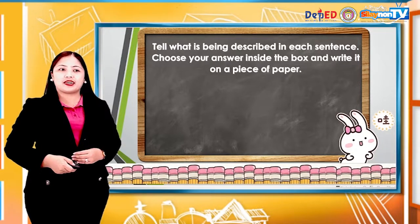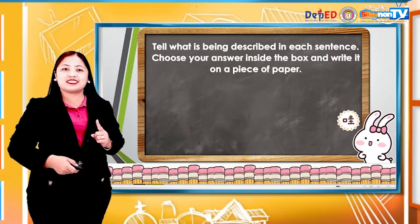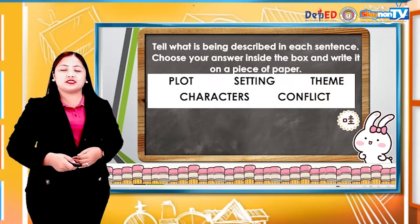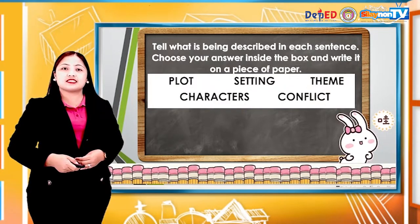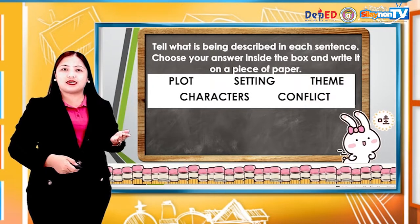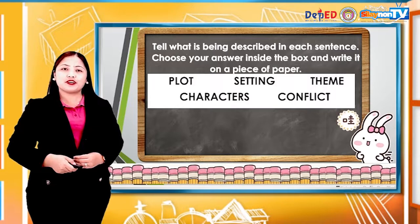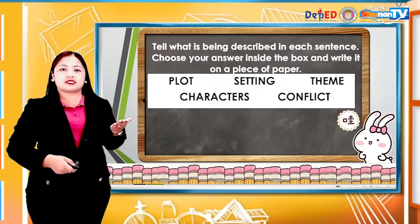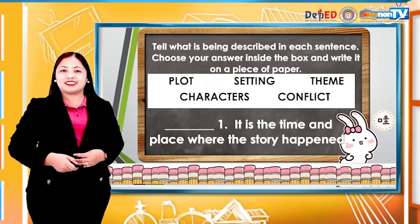Now let's freshen up our minds with the elements of the narrative based from the previous lesson. Direction: tell what is being described in each sentence. Choose your answer inside the box and write it on a piece of paper. Your choices are: plot, setting, theme, characters, and conflict.